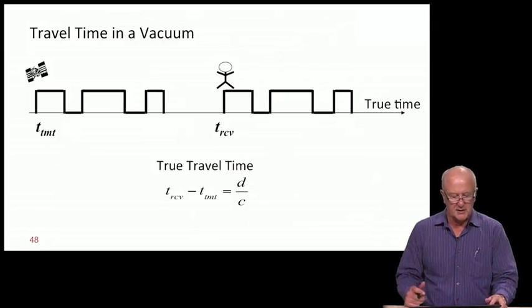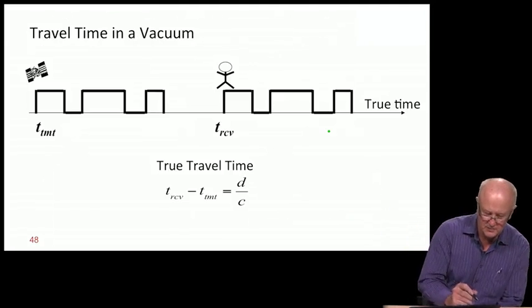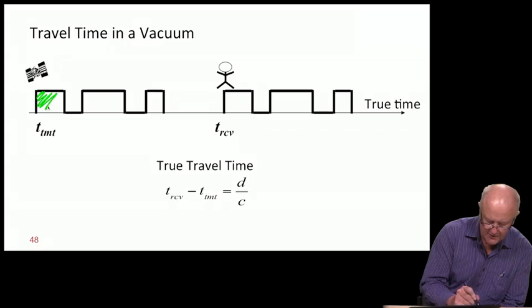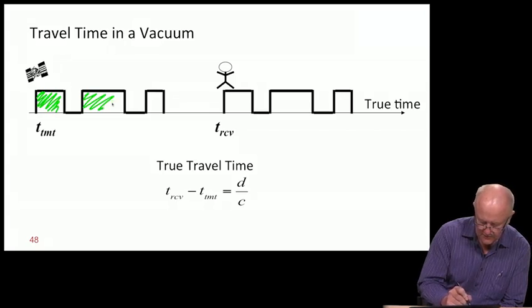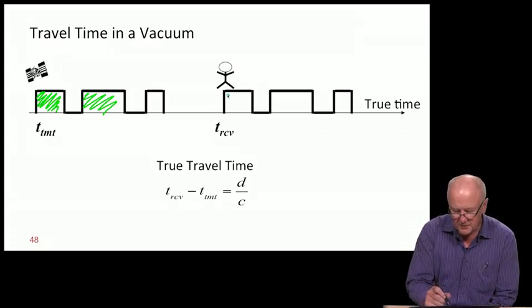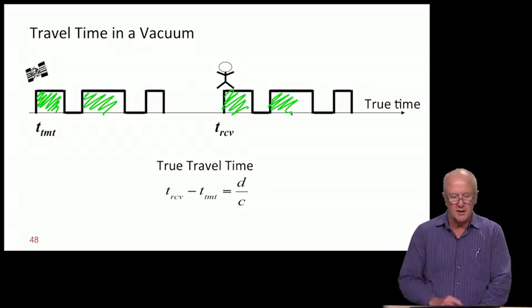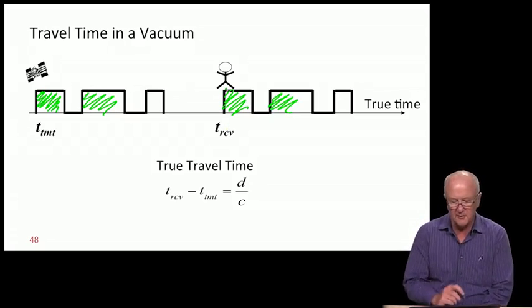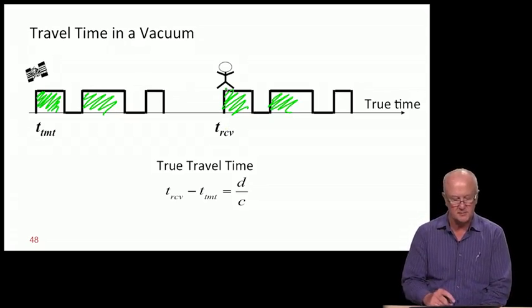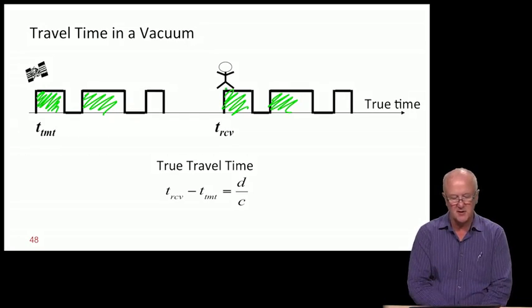Here's the equation: time of transmission, chips going out of the satellite, and sometime later those same chips arrive at the user.